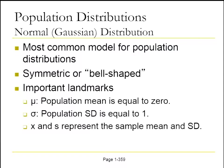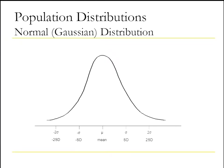We're going to start with the population distribution everyone's most familiar with: the normal distribution, sometimes called the Gaussian distribution. It's the most common model — symmetric and bell-shaped. Some important statistical landmarks: the population mean of that distribution is equal to zero and is denoted by the Greek letter mu. The population standard deviation is equal to one and is denoted by sigma. The sample mean is denoted x-bar, and little s represents the sample standard deviation.